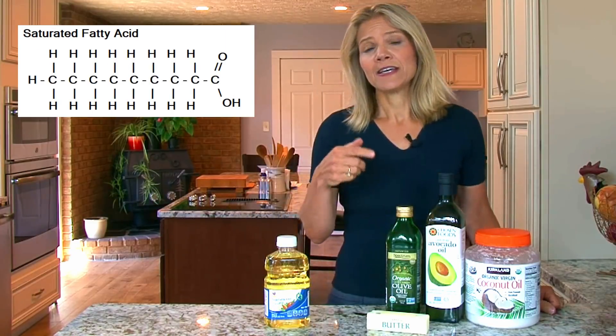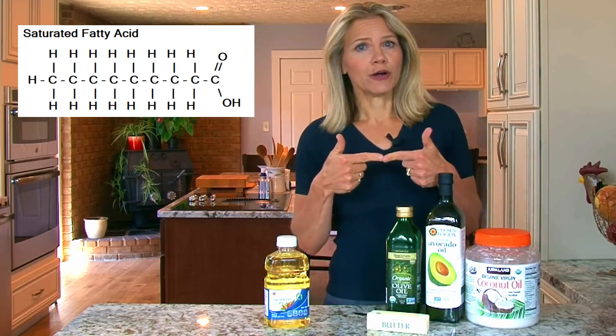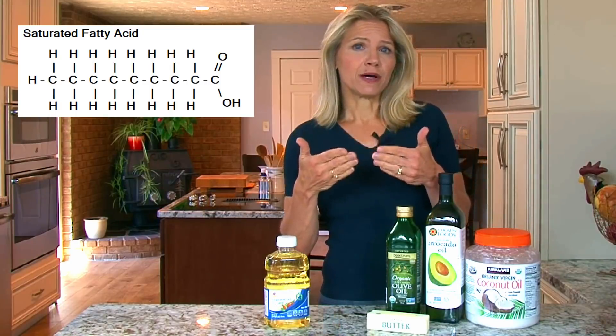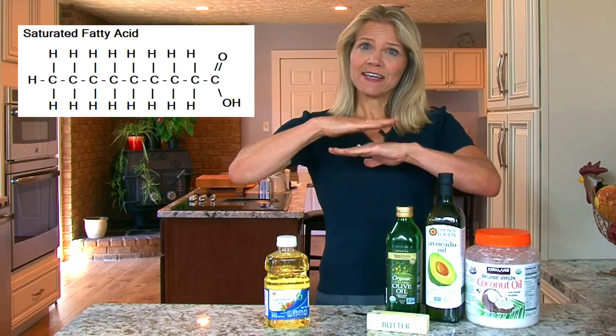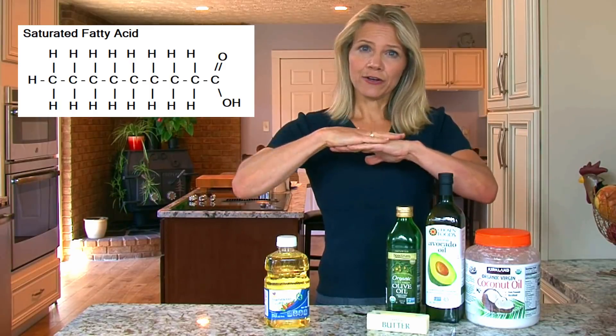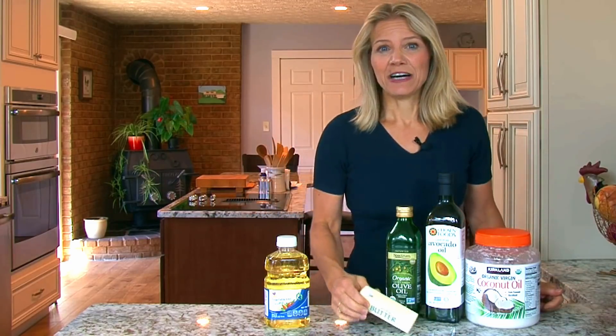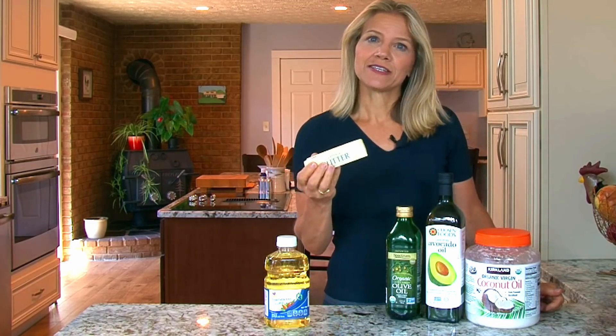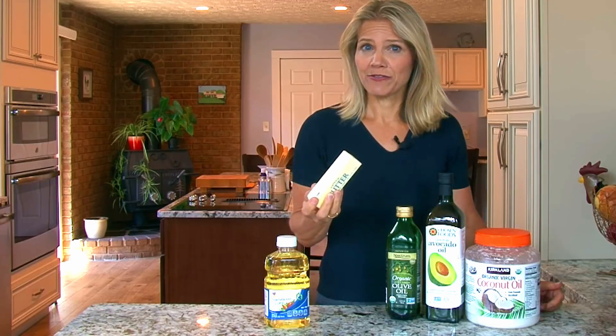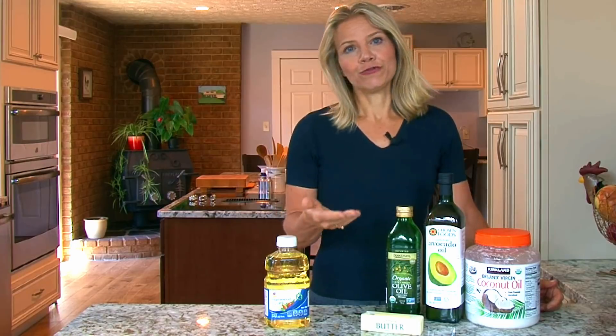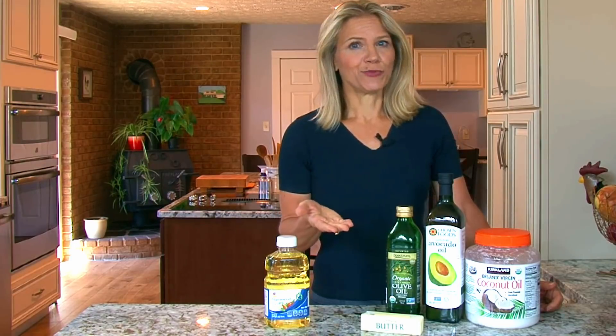Saturated fat only contains single bonds between the carbon atoms, which makes the molecule nice and straight. So saturated fats can fit together with their neighboring fatty acid closely, and that gives us solid fats. A perfect example is a stick of butter, which is mostly saturated fat. Saturated fat is also found in animal products like eggs and full-fat dairy, red meat, as well as tropical oils like coconut oil and palm oil.